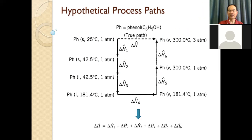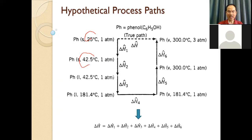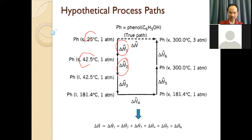We start from solid phenol at 25°C, 1 atm, and then change the temperature from 25 to 42.5°C. At this point, the solid transforms to liquid phase — at 42.5°C, 1 atm, phenol goes from solid to liquid. This is a temperature change at constant pressure, and then a phase change from solid to liquid at constant pressure and temperature.